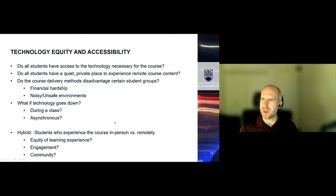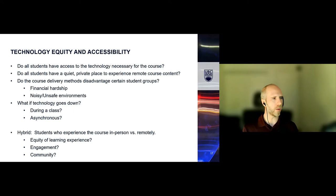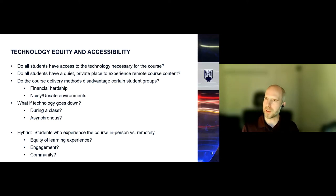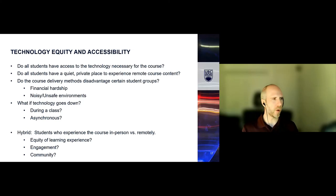A critical consideration is equity and accessibility in both hybrid and multi-campus courses. Questions such as: do all students have access to the technology necessary for the course? We can't always assume students have a laptop. Do all students have a quiet, private place to experience remote course content? If you're asking students to attend on campus and also connect remotely, do they have a quiet place on campus — or at home — to do so with their camera on comfortably? Do they have an adequate internet connection?